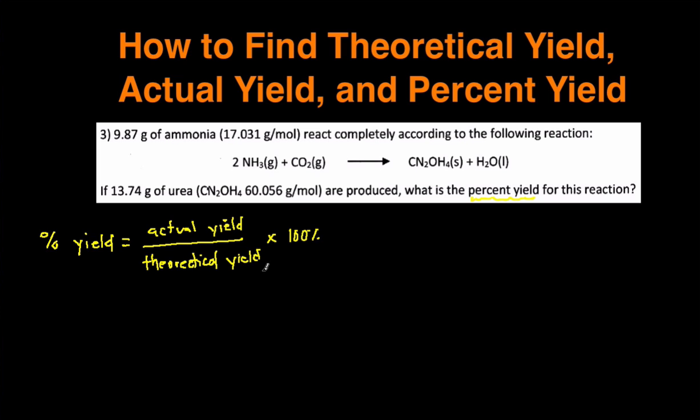The theoretical yield is how much product theoretically should have been produced if your experiment went 100% according to plan and there was no errors at all. So this problem actually tells us what the actual yield for urea is. It tells us that there's 13.74 grams of urea that was produced, so we're going to substitute that in for the actual yield.